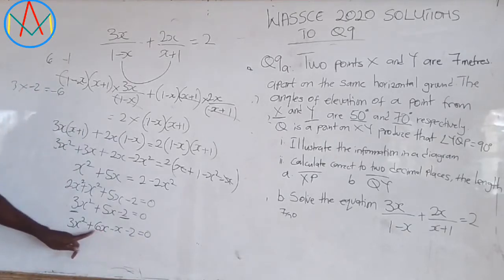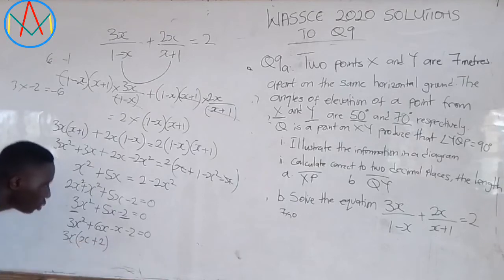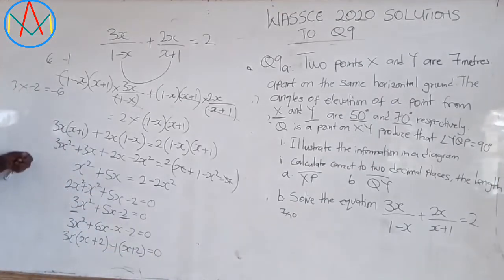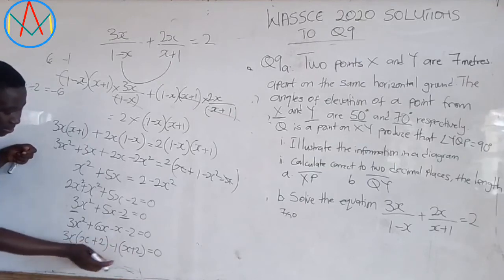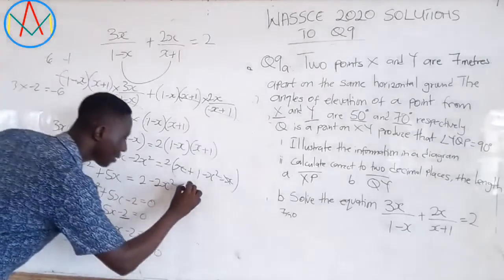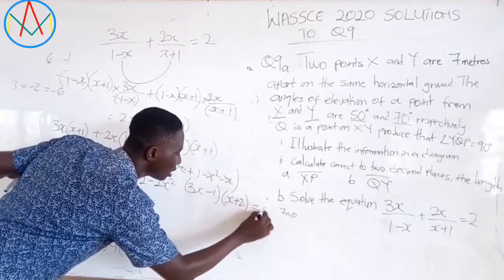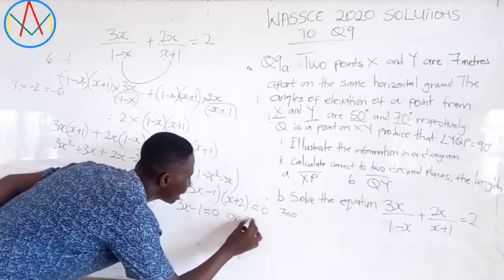Factoring: from the first two terms, 3x(x + 2), and from the last two terms, -1(x + 2). Both brackets are (x + 2), so we get (3x - 1)(x + 2) = 0. Therefore either 3x - 1 = 0 or x + 2 = 0. From 3x - 1 = 0, we get x = 1/3. From x + 2 = 0, we get x = -2. Those are our final answers.